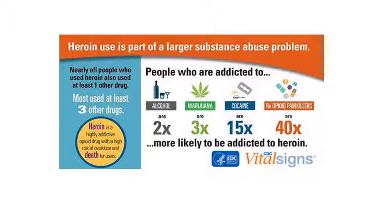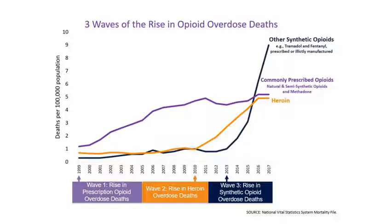It doesn't happen in a vacuum — heroin is just part of a larger substance use problem. People using one substance are more likely to be addicted to another. Drinking alcohol poses twice the risk of becoming addicted to heroin, while using prescription opioids increases the risk of heroin addiction 40 times. This slide also shows the continuing rise of opioid overdose deaths, with synthetic opioids continuing to increase over time.